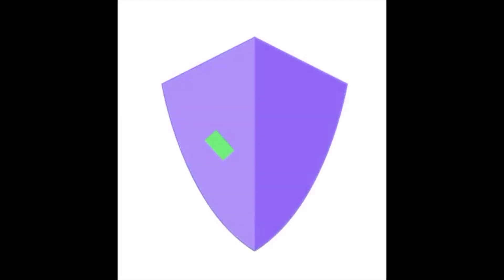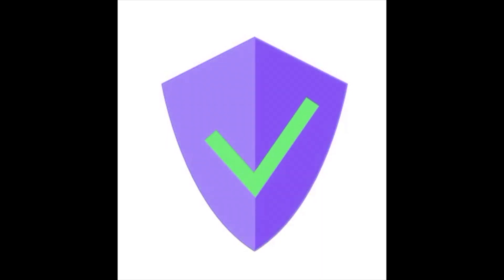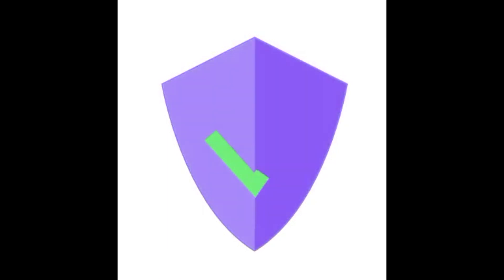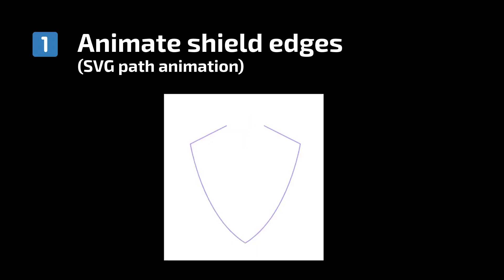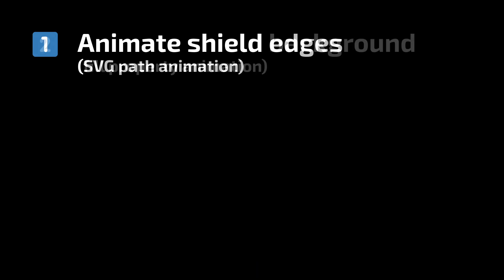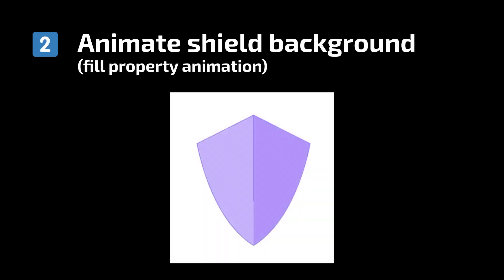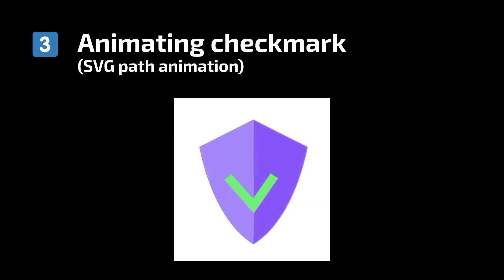We've successfully split the SVG into components and we can now start planning the animation. Let's have one more look at what we want to achieve, this time in slow motion, and try to observe what parts the animation is made of. The first thing that animates is the edges of the shield, which is actually going to be one of the most interesting and challenging parts because you have to animate the SVG path. Then the shield background animates, which should be pretty straightforward, and the last part is animating the checkmark, which is going to be really similar to the first part.